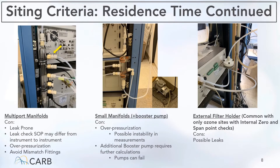Your station manifold plays a key role in your residence time calculation, and the type of manifold you use depends on your sampling goals. For example, if your station needs to sample multiple gas species, you may want to use a multiport manifold shown here to the left. Or if you're focusing on one pollutant such as ozone, you may want to use a smaller manifold, or even without a manifold and just use an external filter holder shown to the right. There are several caveats when using these types of manifolds, especially ones with multiports. One disadvantage is that leaks can occur around the Teflon fittings, and if there are leaks, your residence time will change.